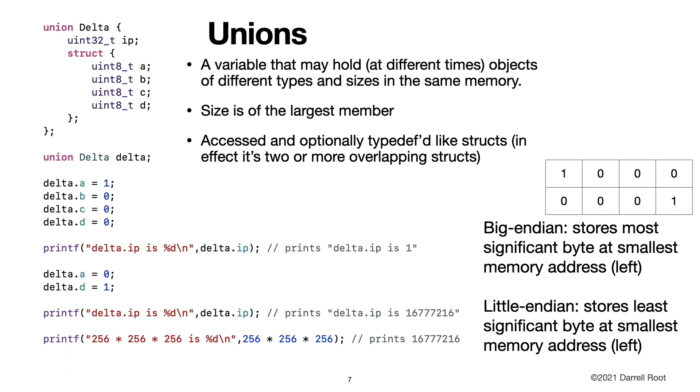A union is a data structure that may hold at different times, objects of different types and sizes in the same memory. The size is of the largest member. Here's an example where we create a union delta. It has two members. One is an unsigned 32-bit integer. And then the other is a struct with four unsigned 8-bit integers. So as a result, this union is four bytes in size. We can access the memory in the union via a, b, c, d, or we can access the memory in the union via the name ip.